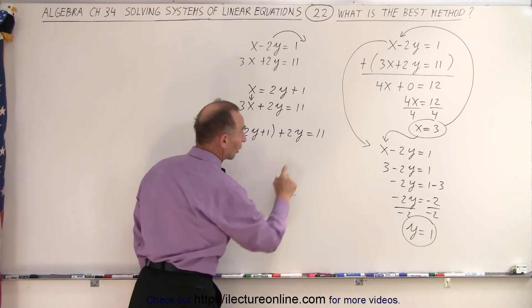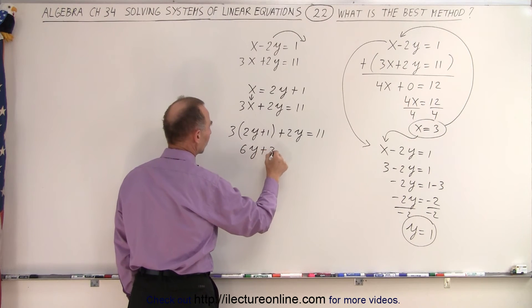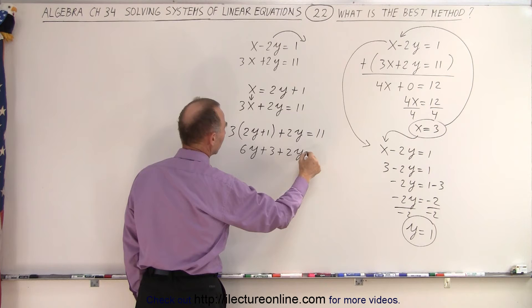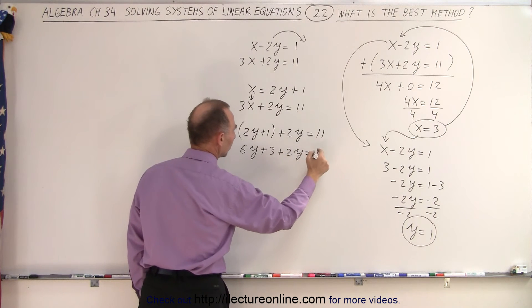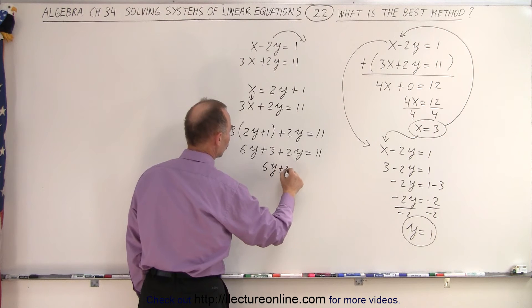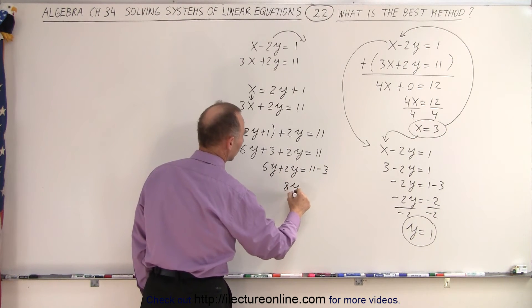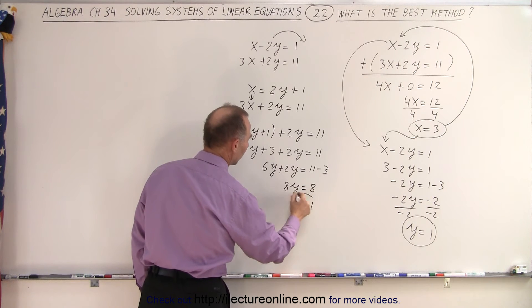Now I have an equation that only contains the variable y. So here we get 6y plus 3 plus 2y equals 11. Move the 3 to the other side. I get 6y plus 2y is equal to 11 minus 3. 8y equals 8. So y equals 1.